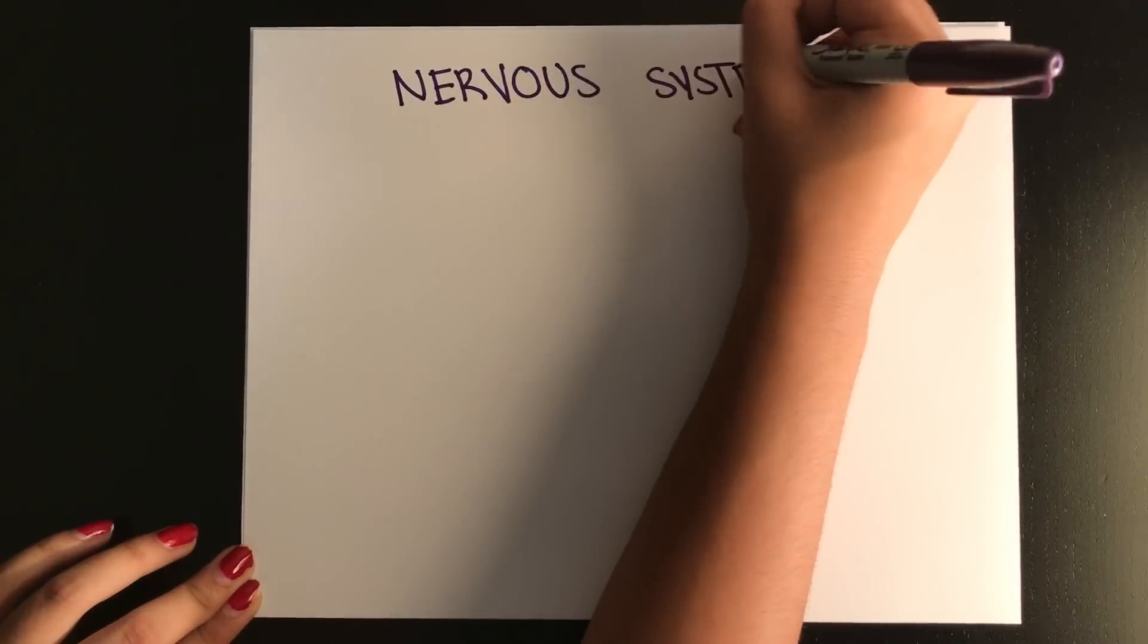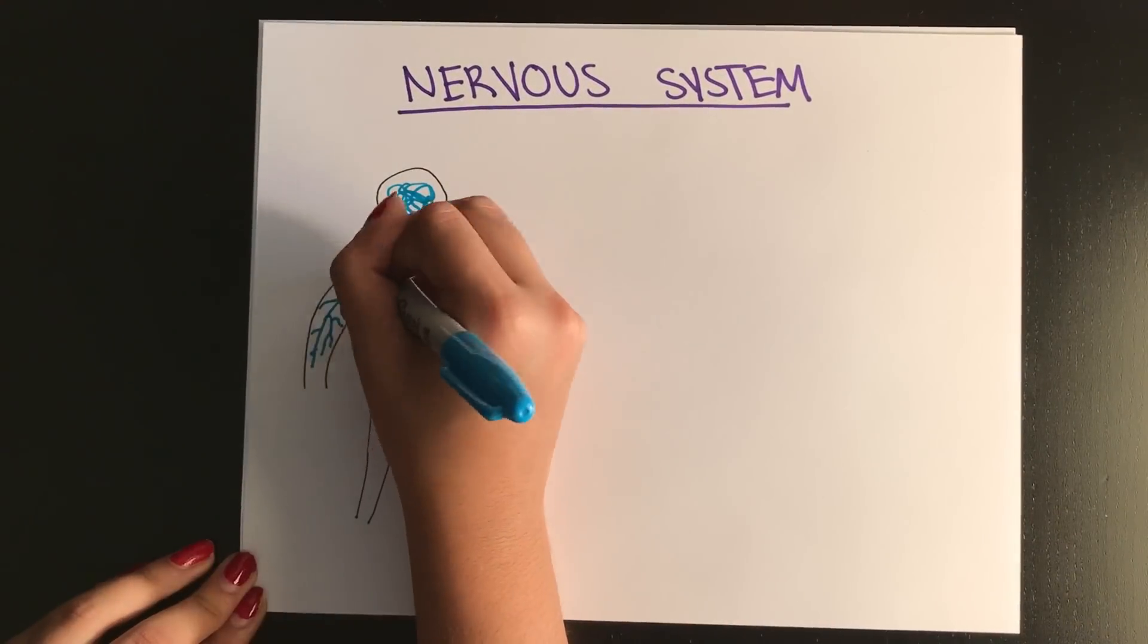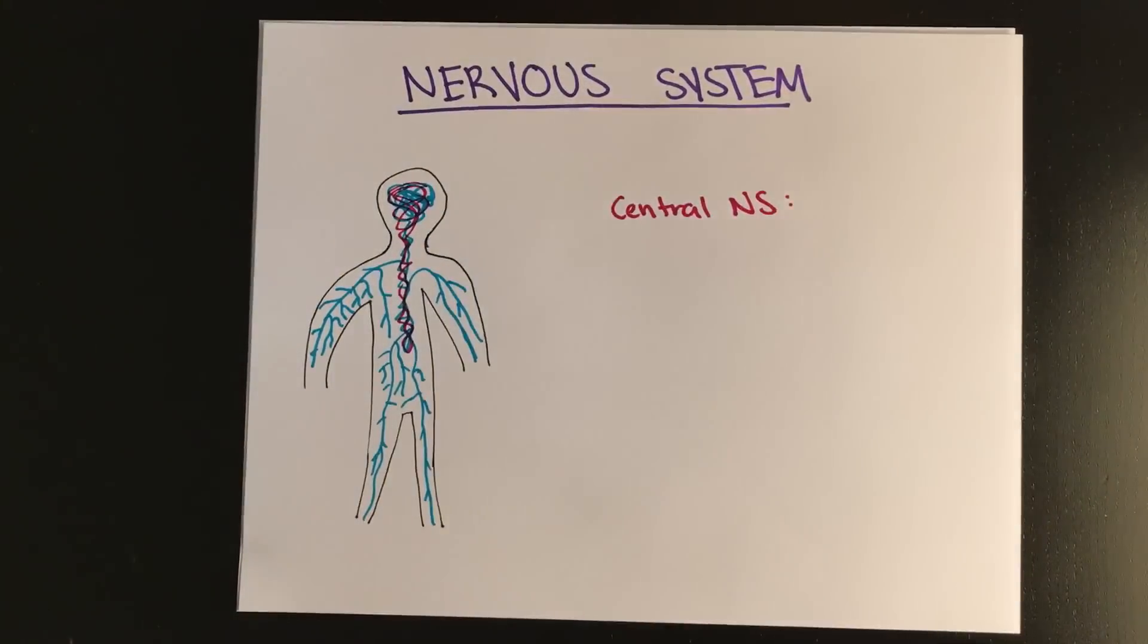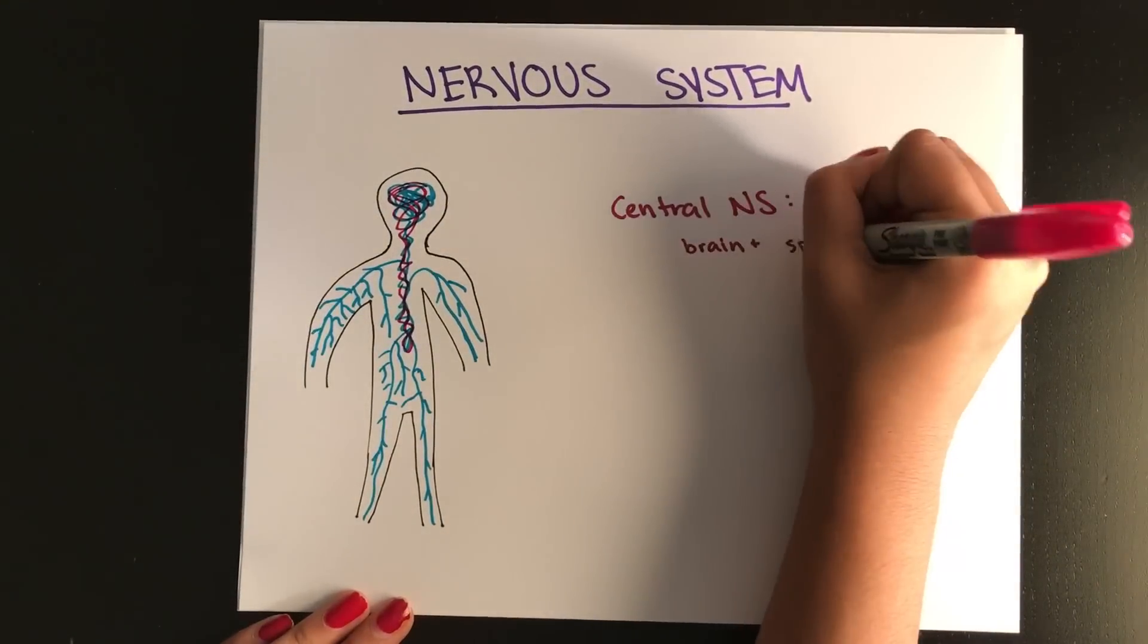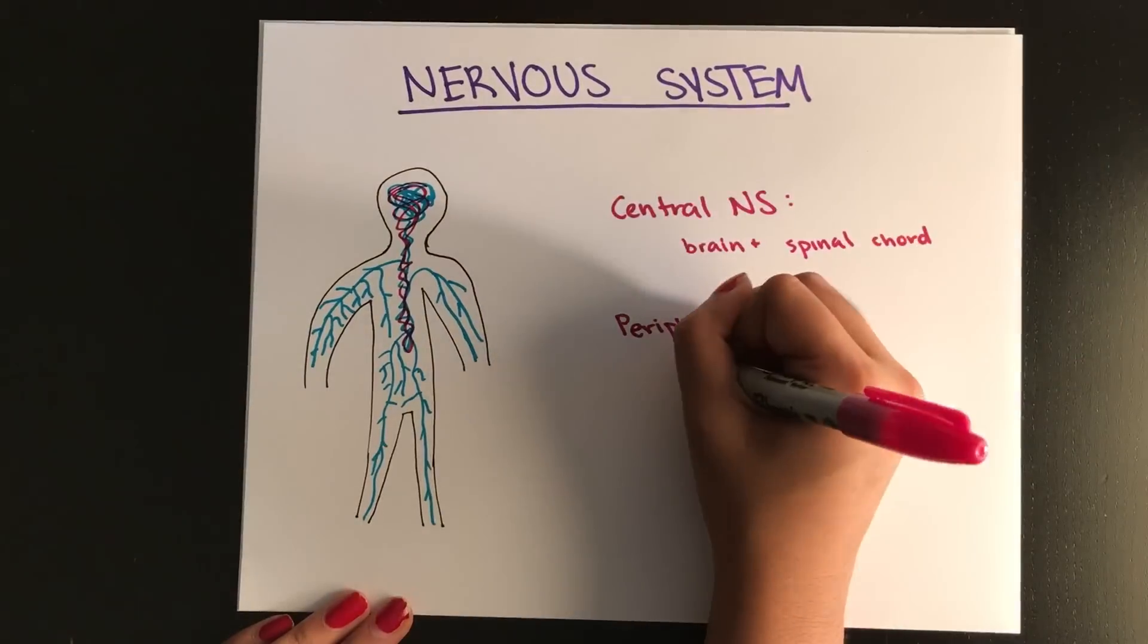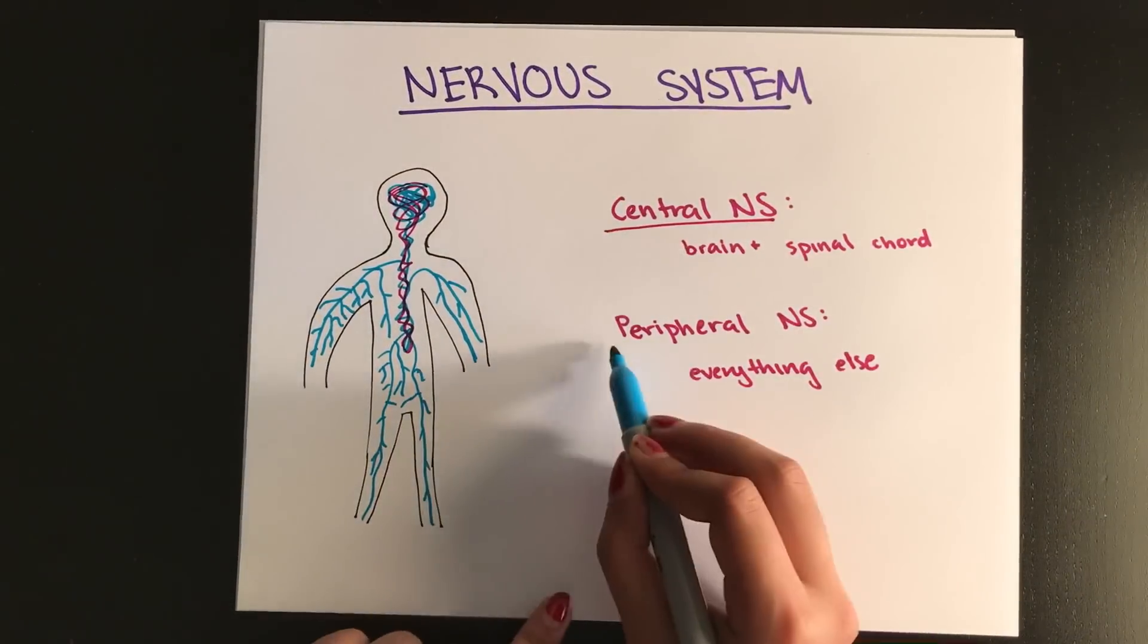So now we're going to get way bigger than on the cellular level. We're going to talk about the nervous system on a macro level. So the nervous system is split into two parts. That's the central nervous system, which includes the brain and the spinal cord, and all other neurons are part of the peripheral nervous system. So basically everything else that is in the brain or the spinal cord is part of the PNS.